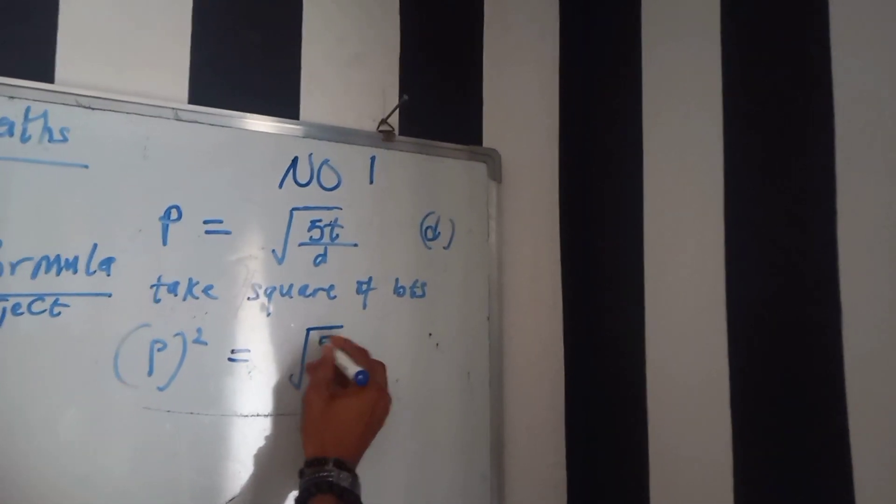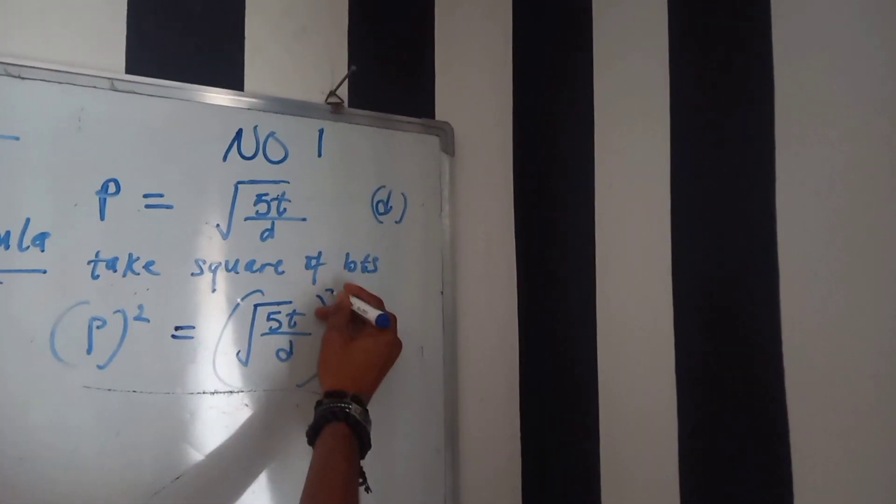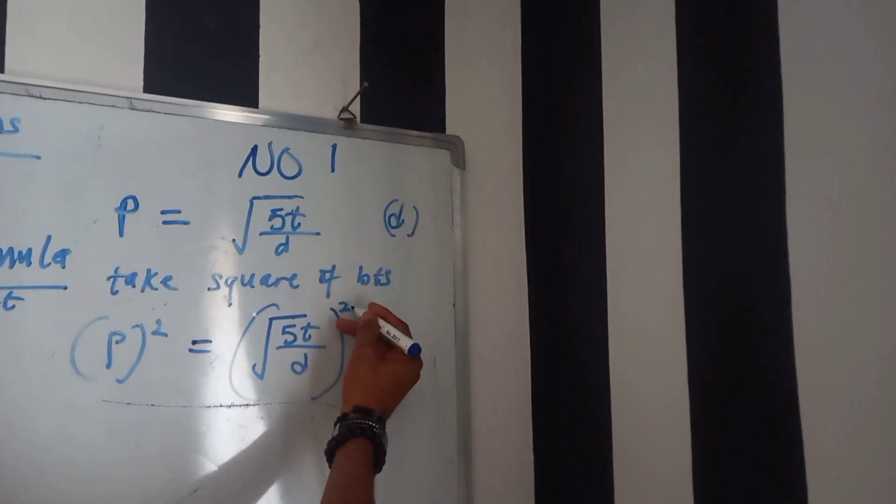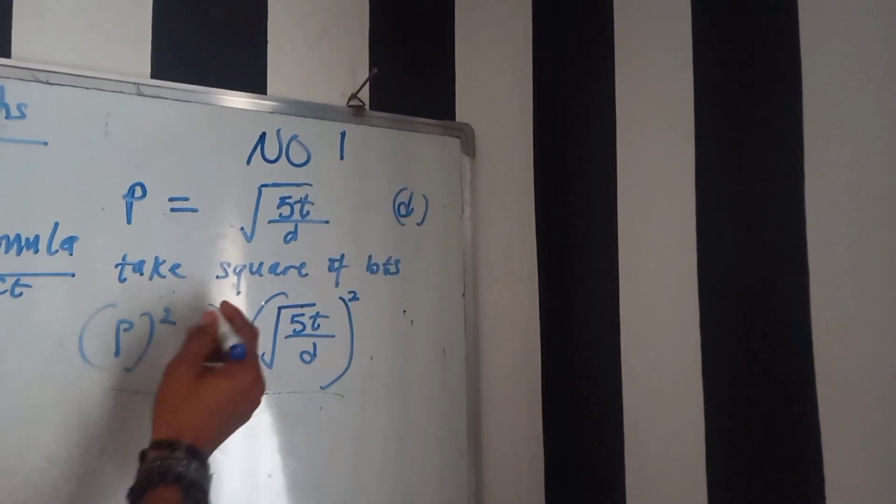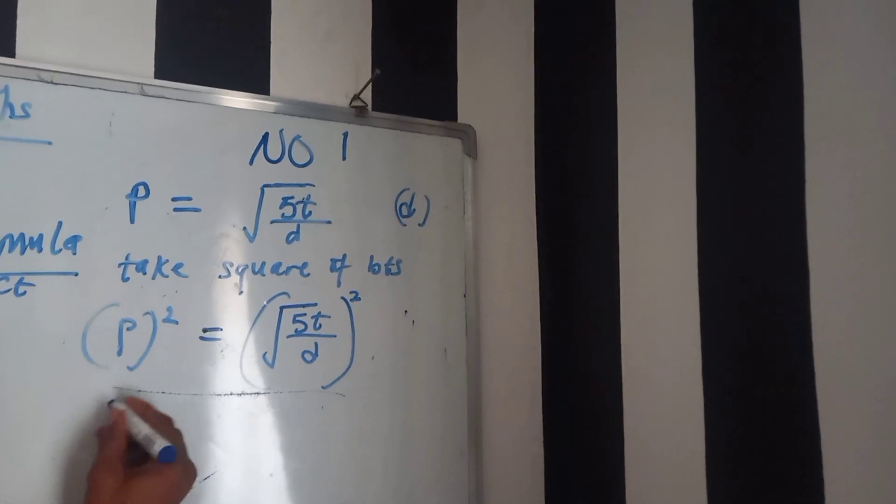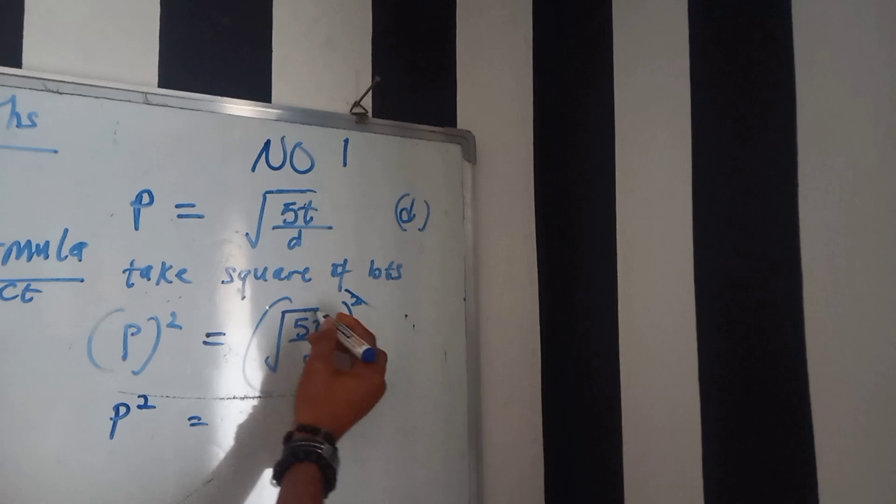Square root of 5c over d, so take square of it also because the operation you perform in the front expression should be on both sides. We have that P square equals 5c over d. The next is cross multiply.